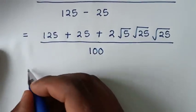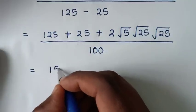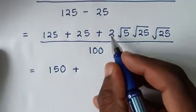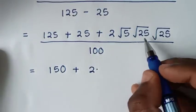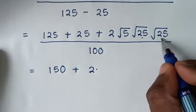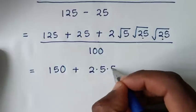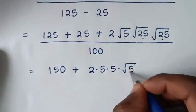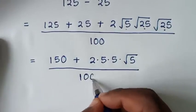This simplifies to 150 plus 2 times square root of 25 (which is 5) times square root of 25 (which is 5) times square root of 5, over 100. So that is 150 plus 2 times 5 times 5 times square root of 5, all over 100.